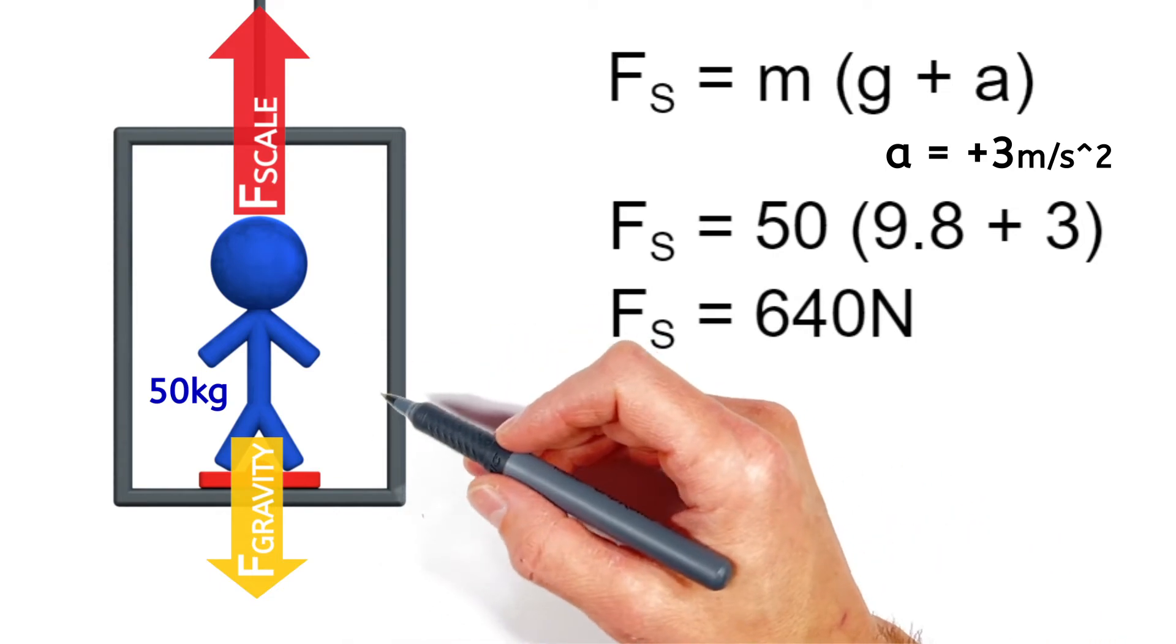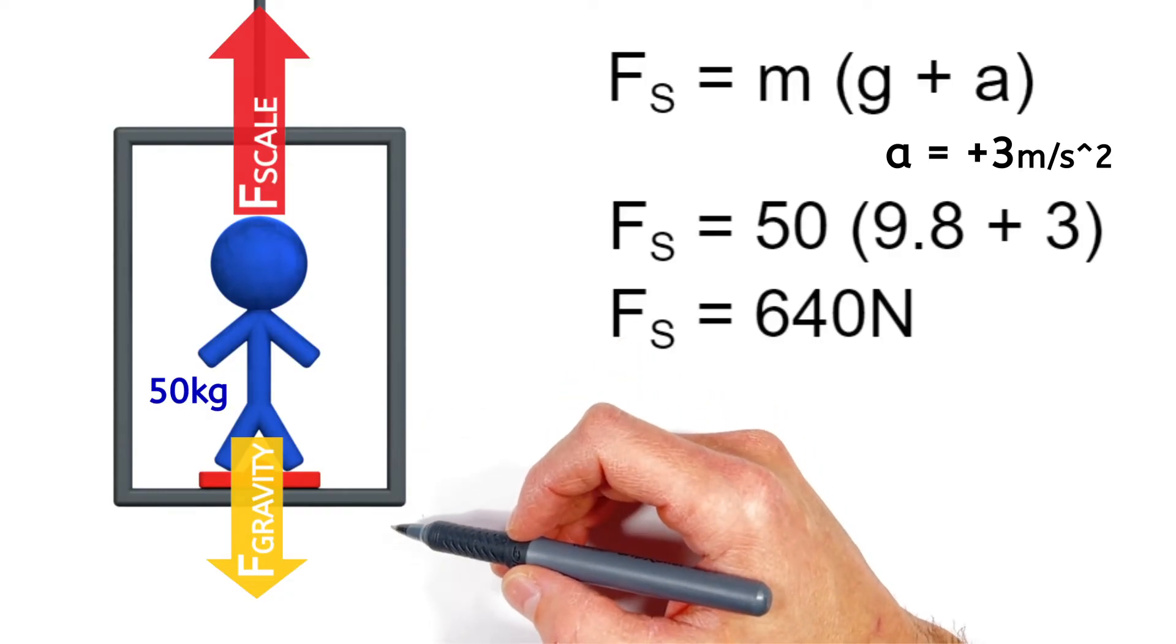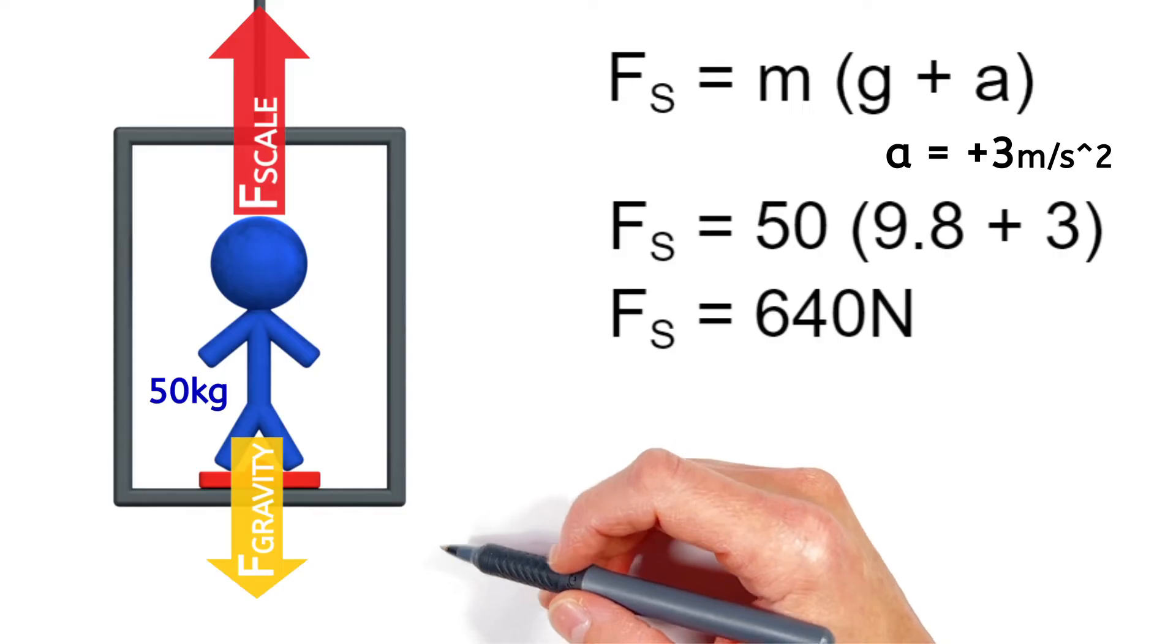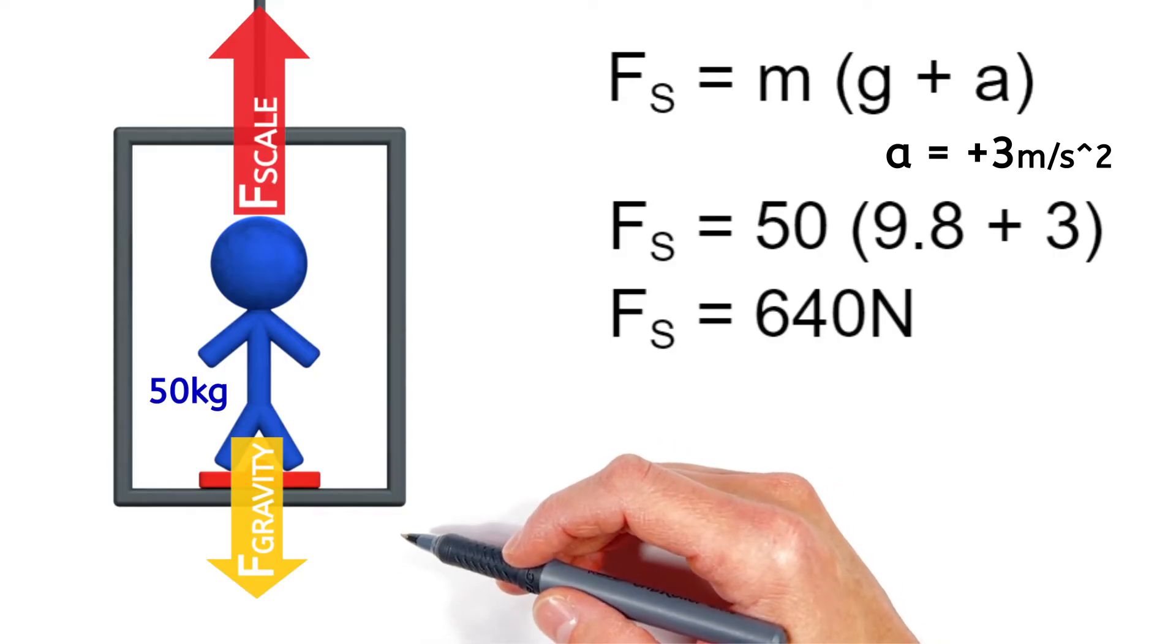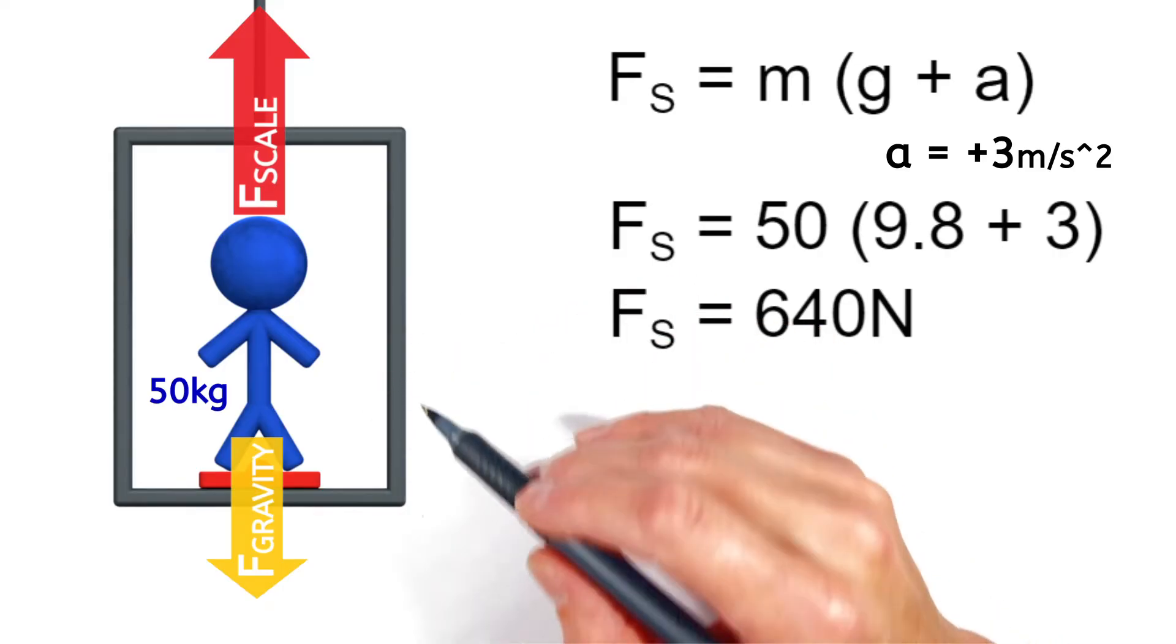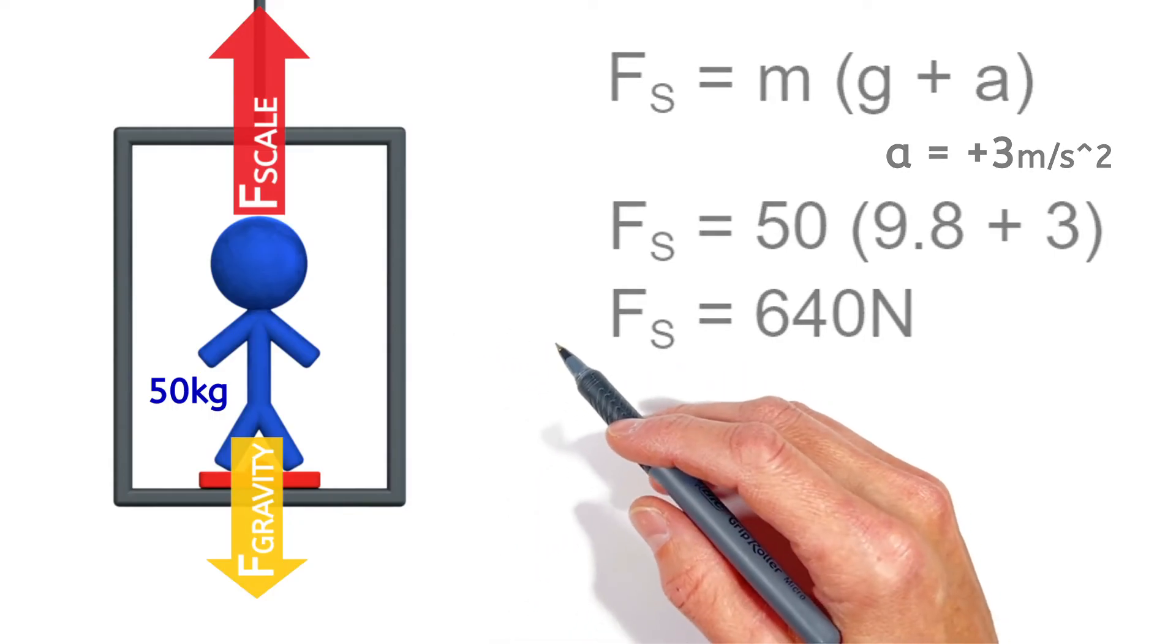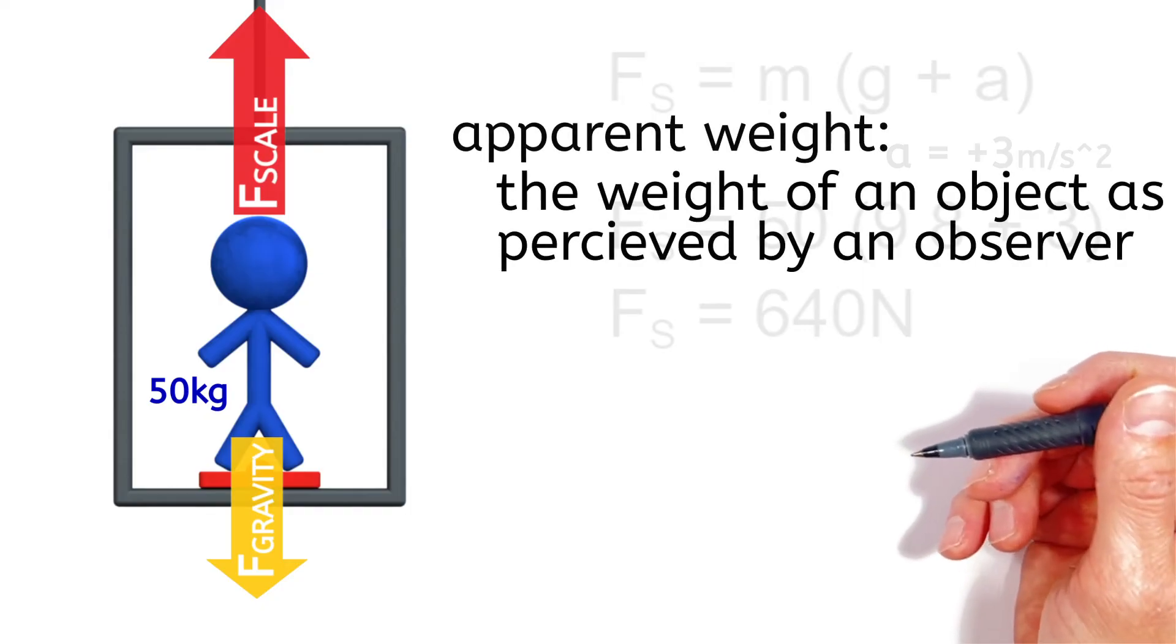And it's not that the person actually weighs more. Remember, weight is always mg, so for this person that's 490 newtons. But our scale reads more, and what's critical is the person will actually feel heavier. And that feeling of weight is what we call their apparent weight.